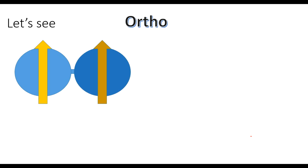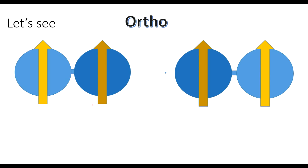Let us see what happens when we exchange the two identical nuclei. For ortho hydrogen, if we exchange the identical nuclei, the second spin comes to the first position and the first comes to the second position. Since there is no change in the sign of the wave function, the sign remains the same — so ortho hydrogen is symmetric.